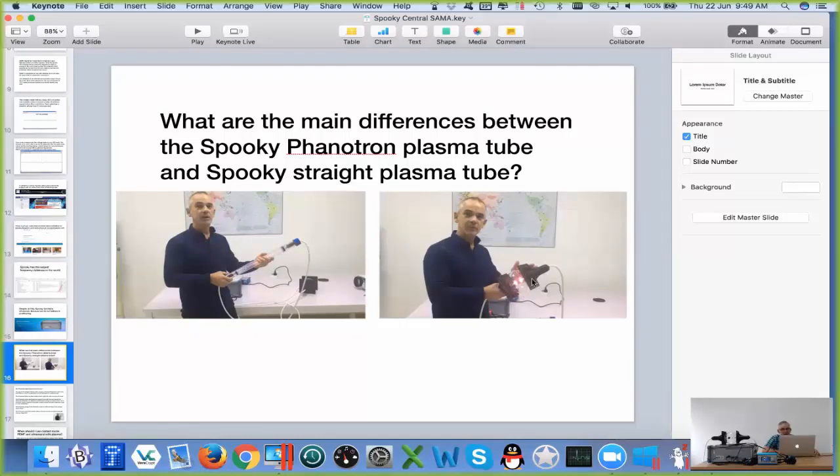Now the Phenatron tube was quite a long time in development. We had to source some things which you can't just buy from a hardware store. The glass, for example, is borosilicate, which is also known as Pyrex or cooking glass. It's the glass that you can throw into an oven for baking and it doesn't crack because it's tough stuff.